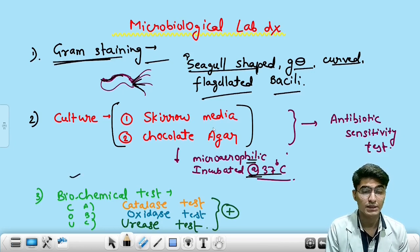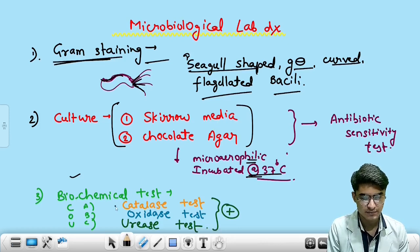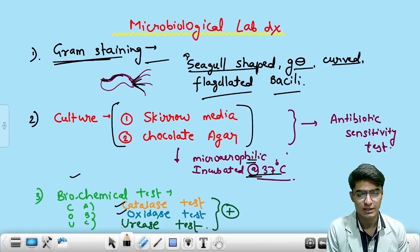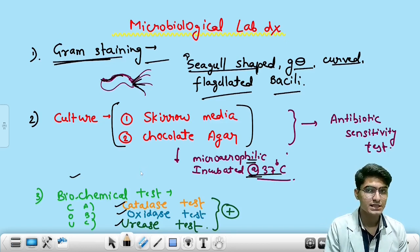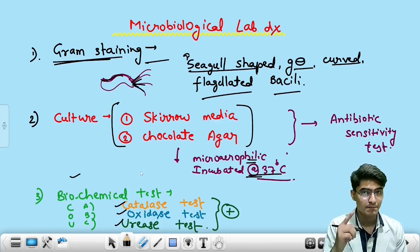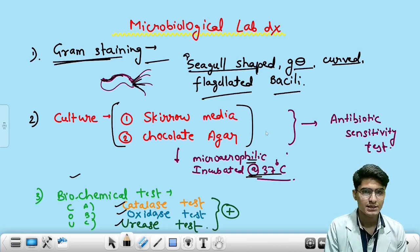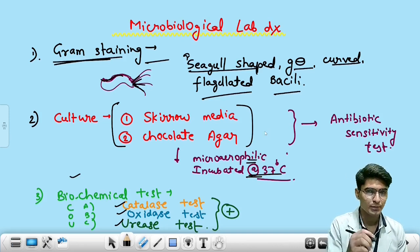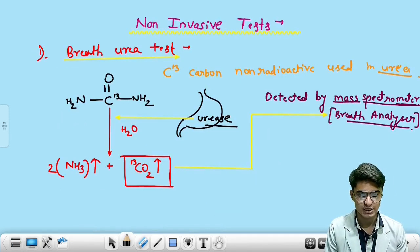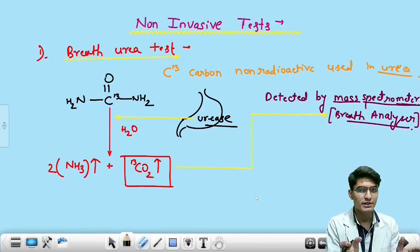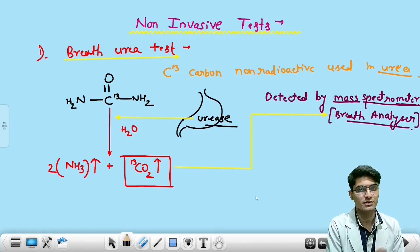For biochemical tests, the three key tests are the catalase test, the oxidase test, and the urease test. All three tests are positive in the case of H. pylori. That concludes the basic microbiological section of H. pylori diagnosis.